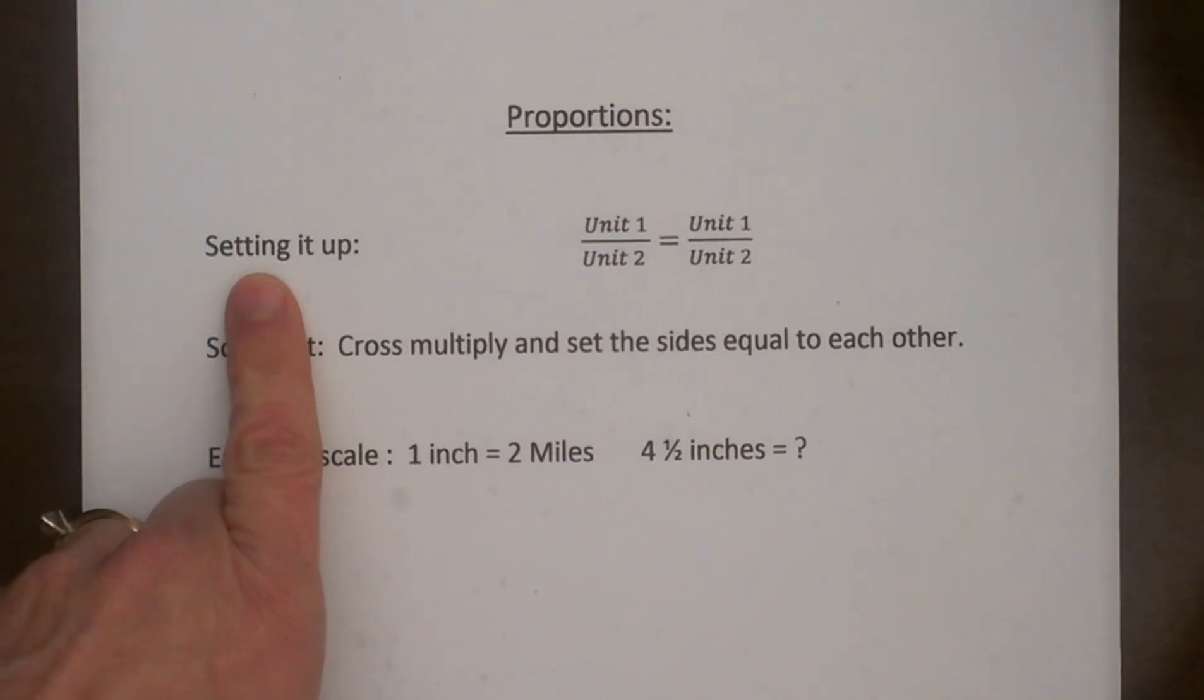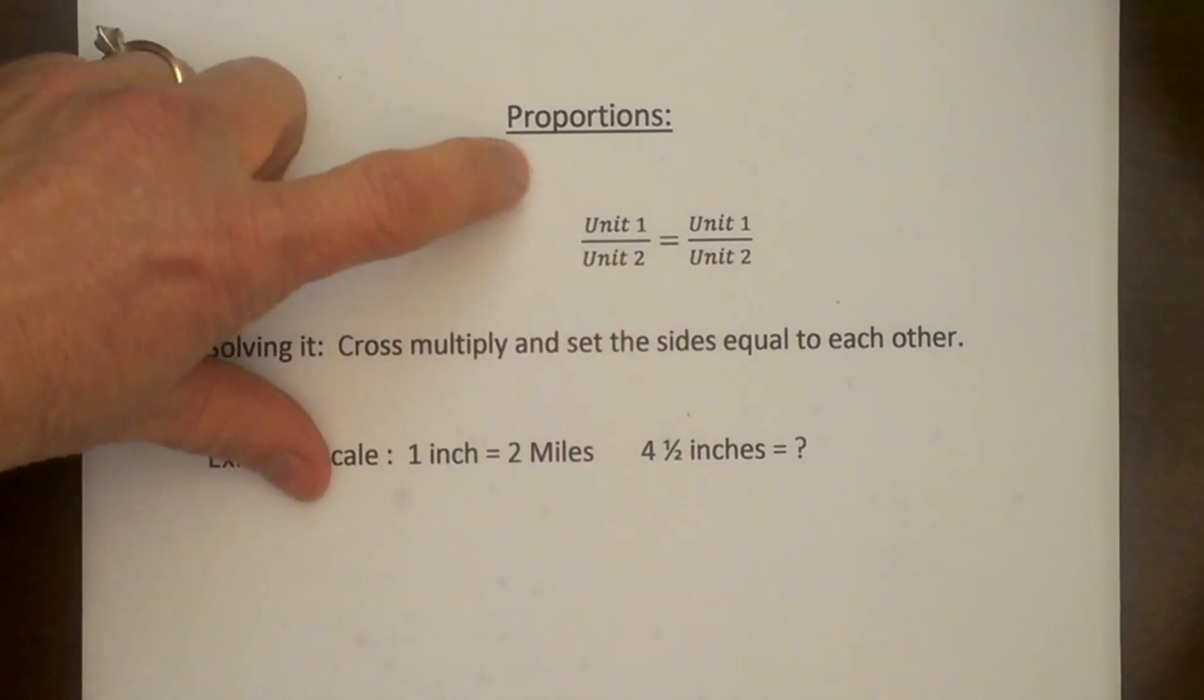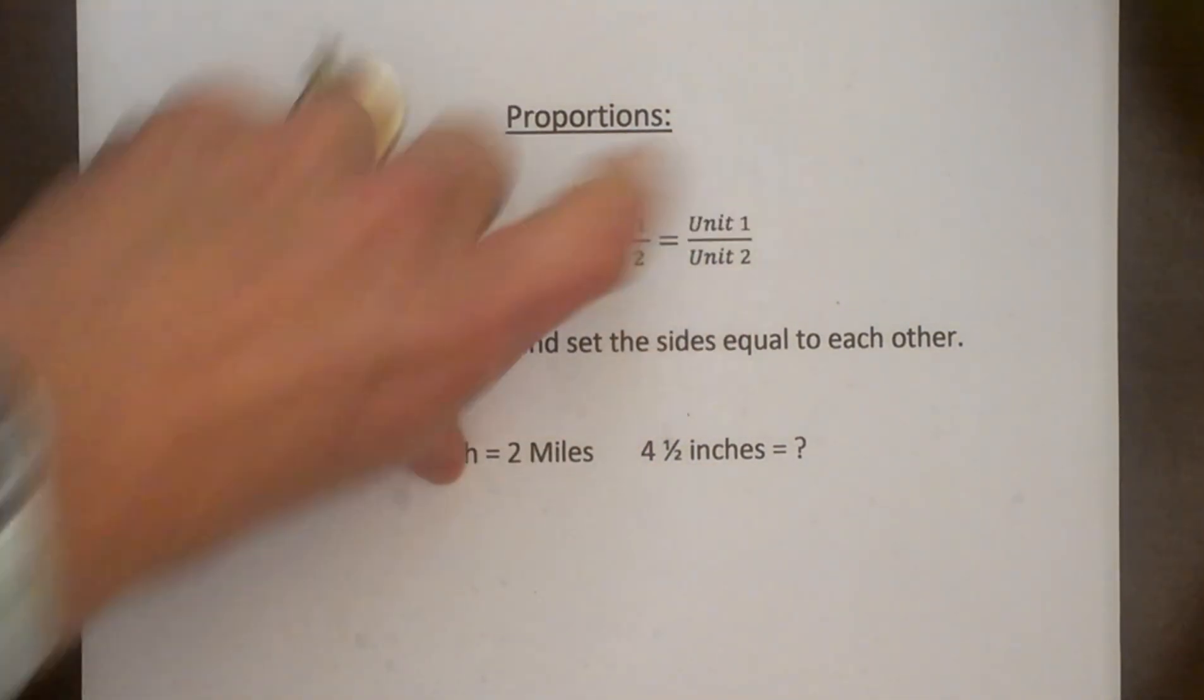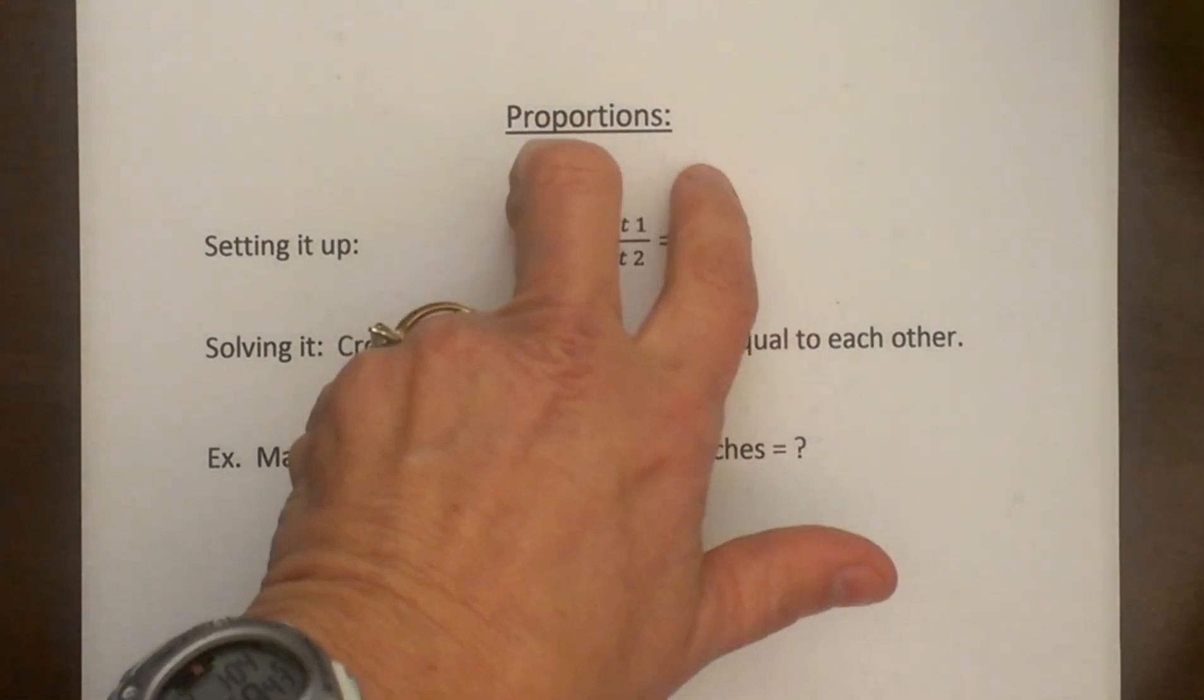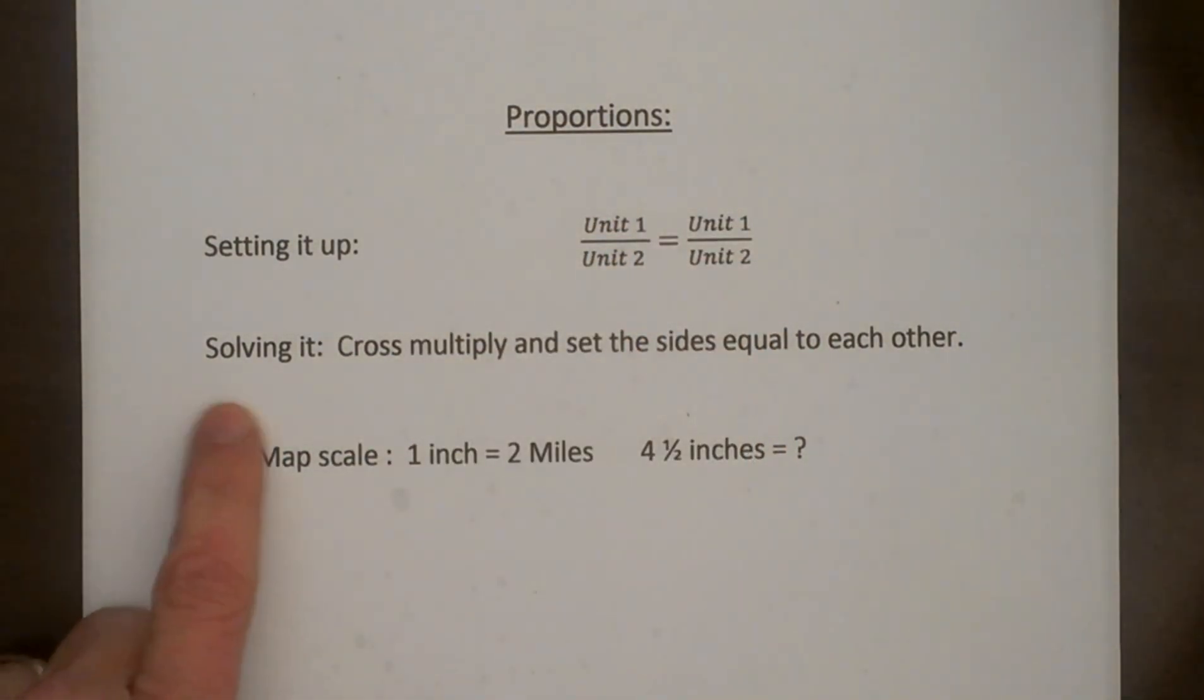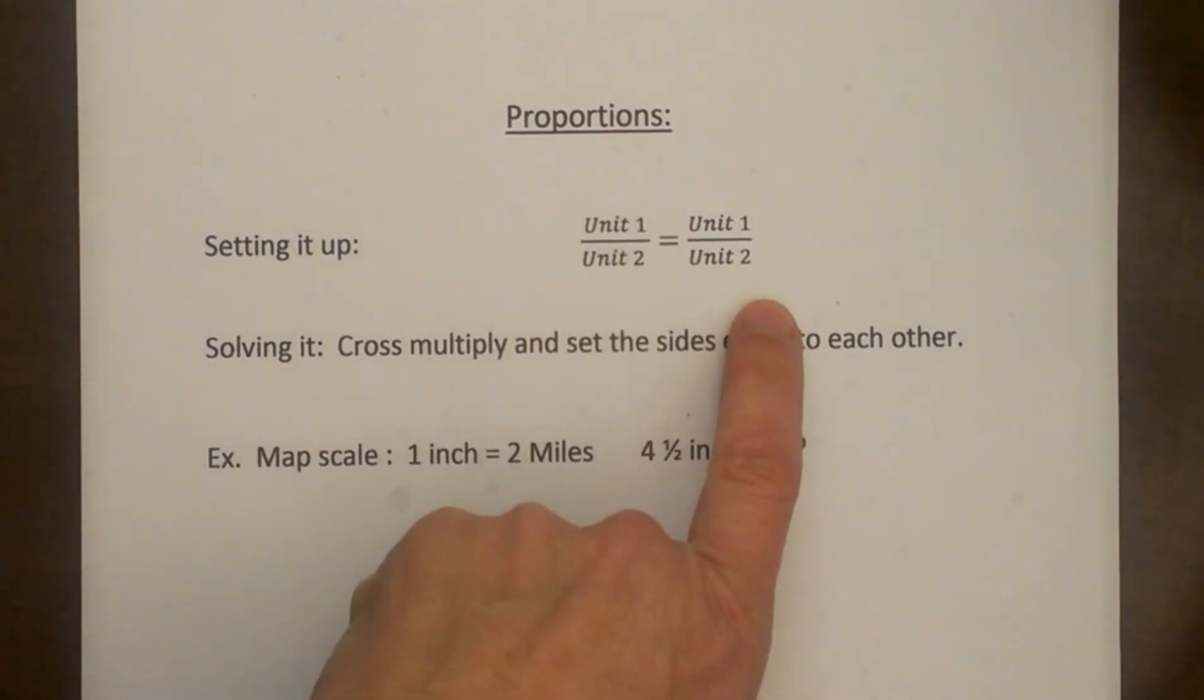First of all we're going to set it up as two fractions that are equal to each other. So we have to have the same unit on the top and its matching unit on the bottom. Once you get your proportions set up with your matching units then you're going to solve it by doing cross multiplying. So you're going to multiply top to bottom and top to bottom across and set these two products equal to each other. And then you're just going to solve the equation.